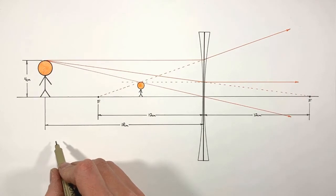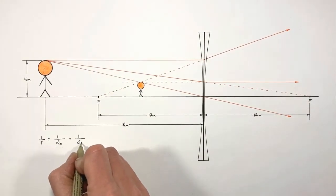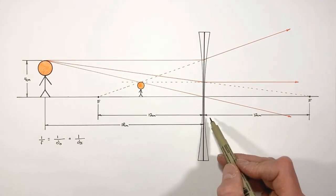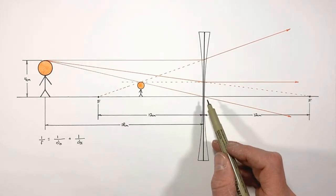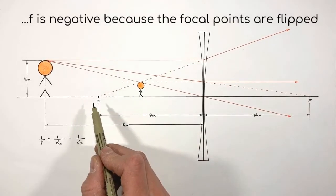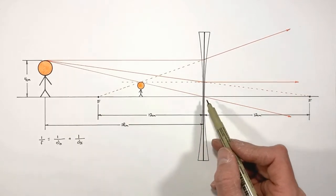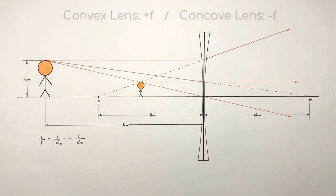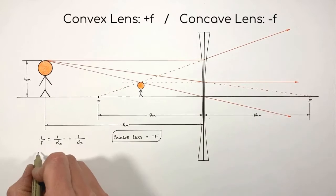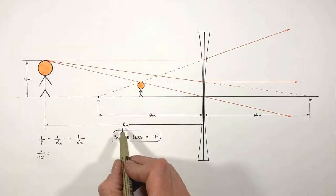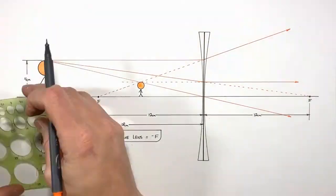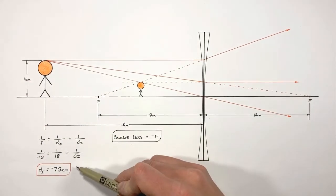Now let's confirm these results using the thin lens equation and magnification equation. To differentiate mathematically between a convex lens and a concave lens, we use a negative focal length for the concave lens — this reflects that the focal points are switched. Plugging in a focal length of negative 12 centimeters and an object distance of 18 centimeters, we find the image distance is negative 7.2 centimeters.